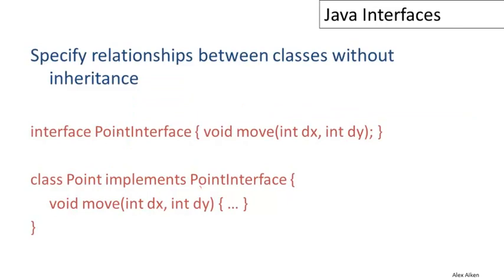So here is an example. We have an interface here called the point interface and the point interface can have a bunch of methods in it and we just declare the signature of those methods. You can also have other things besides methods but the main thing that they're used for usually is for a method interface.